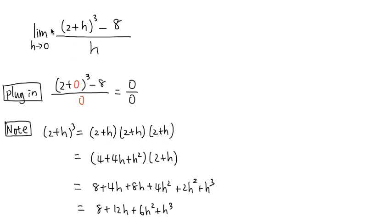And to do this, I'm going to multiply the first two things together. 2 plus h times 2 plus h is going to give us 4 plus 4h plus h squared, because 2 times 2 is 4. And then 2 times h is 2h, but I have another 2h right here, because h times 2. And then h times h gives us the h squared.